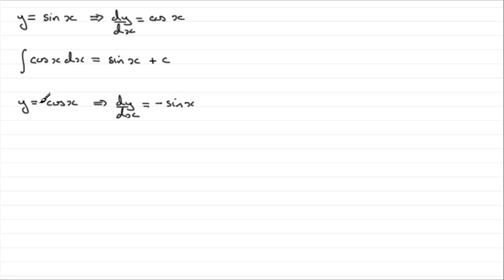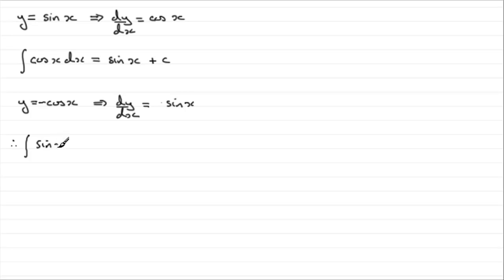So if we were to take y equals minus cos x, then instead of dy by dx being minus sin x, we'd have minus minus sin x, which would be a plus sin x, or just simply sin x. So what this means then is that the integral of sin x with respect to x must be minus cos x, and then again plus c.